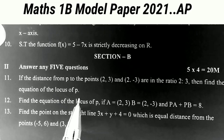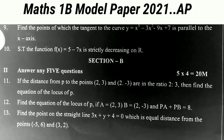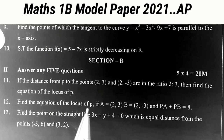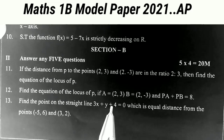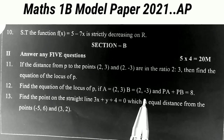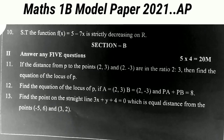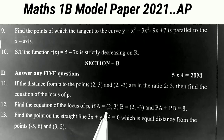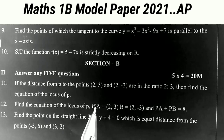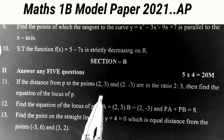This is the most important model from the locus chapter. The next one: find the equation of the locus of P if A = (2, 3), B = (2, -3), and PA + PB = 8. This is also an important model. This year two sums are added from the locus chapter, so 4 + 4 equals a total of 8 marks weightage from the locus chapter.